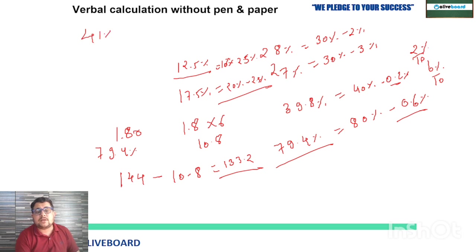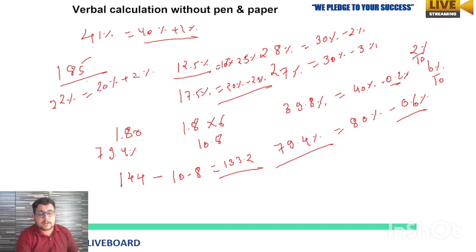I hope you are getting the point. How you can easily calculate any value: 41% is 40% plus 1%. Suppose you have to calculate 22% of 185: 20% plus 2%. 10% is 18.5, double that is 20%, which is 37, plus 2% is 3.7, so 40.7. By this splitting rule, you can easily solve percentage by the help of 10% only. Let's take some examples so you will have a better idea.